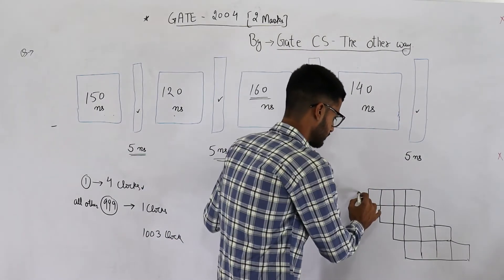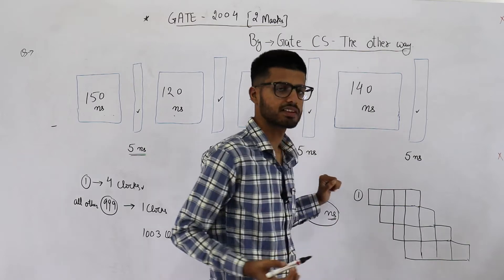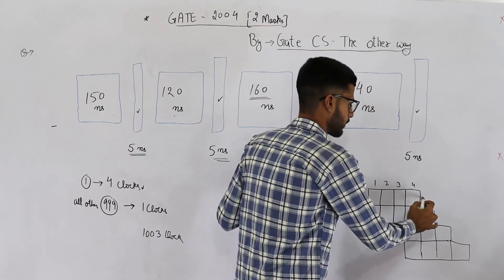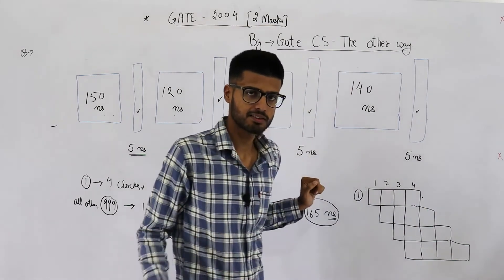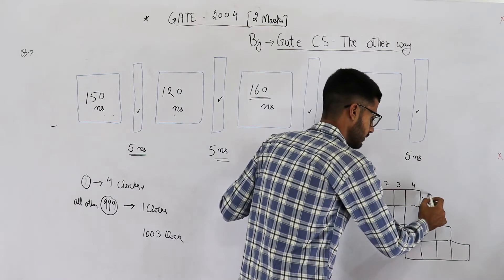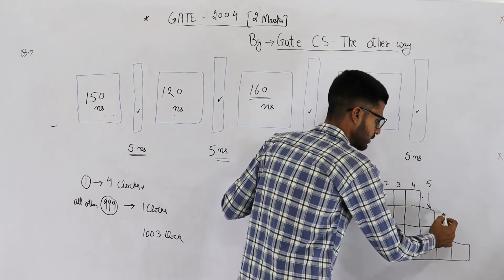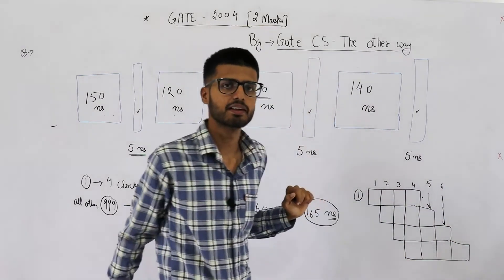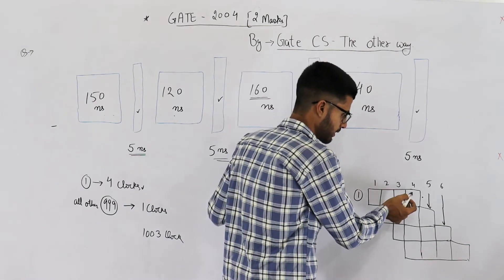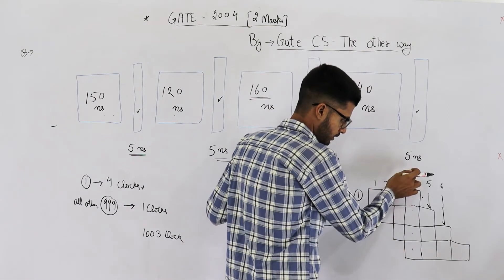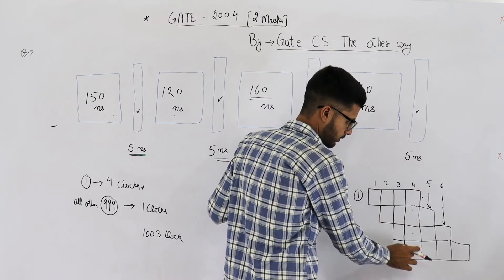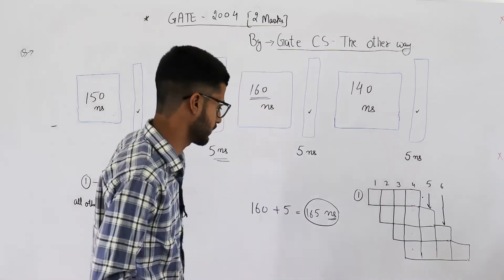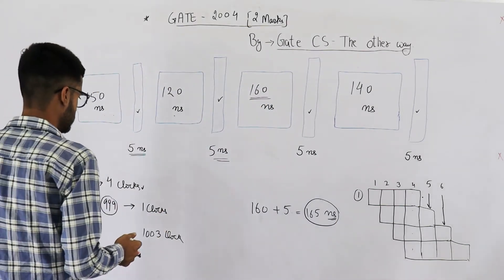The first instruction gives its result after clocks 1, 2, 3, and 4. The second instruction gives its result in the fifth clock, and the third instruction is completed in the sixth clock. That is the benefit of pipelining: once the pipeline is completely filled, each stage works on a different instruction simultaneously.